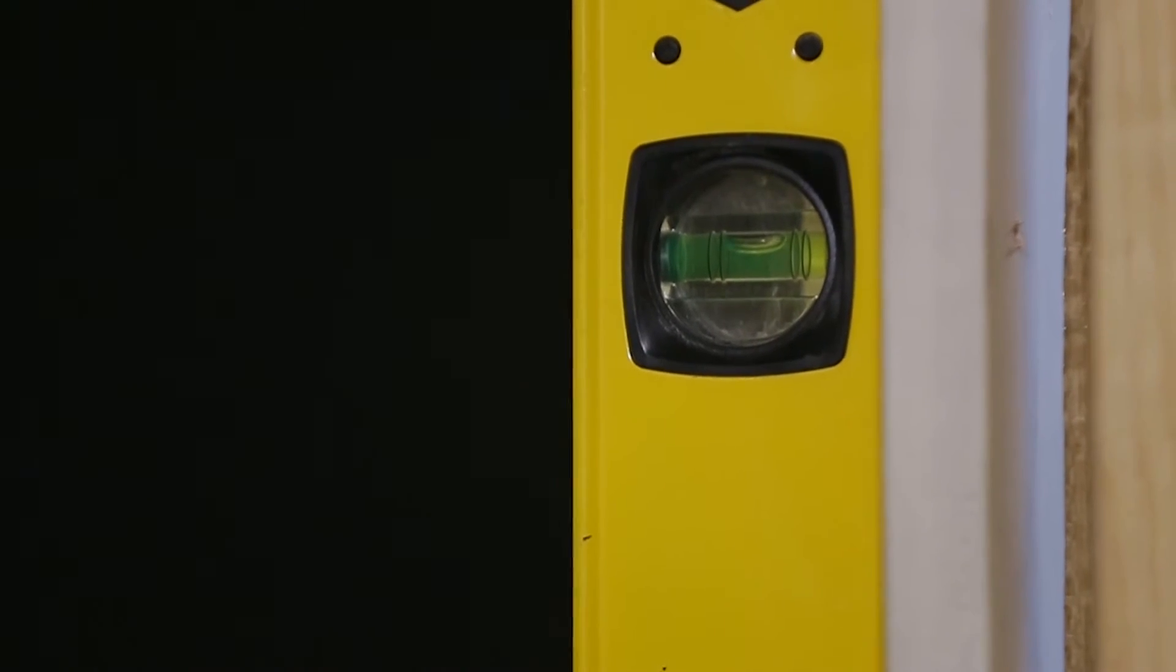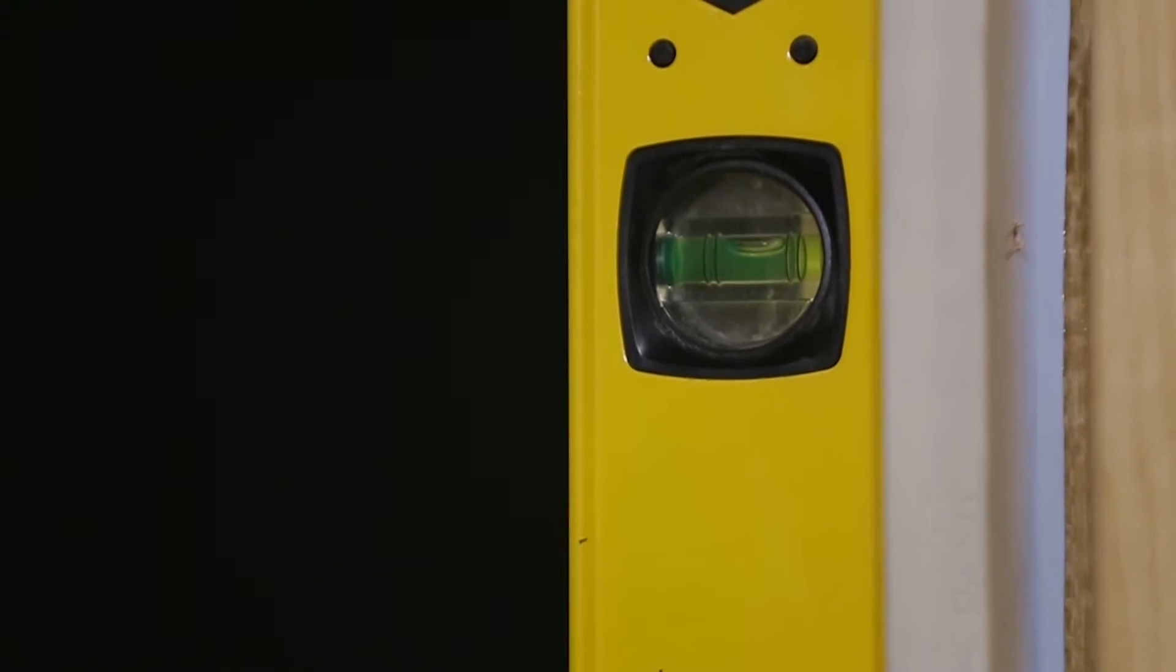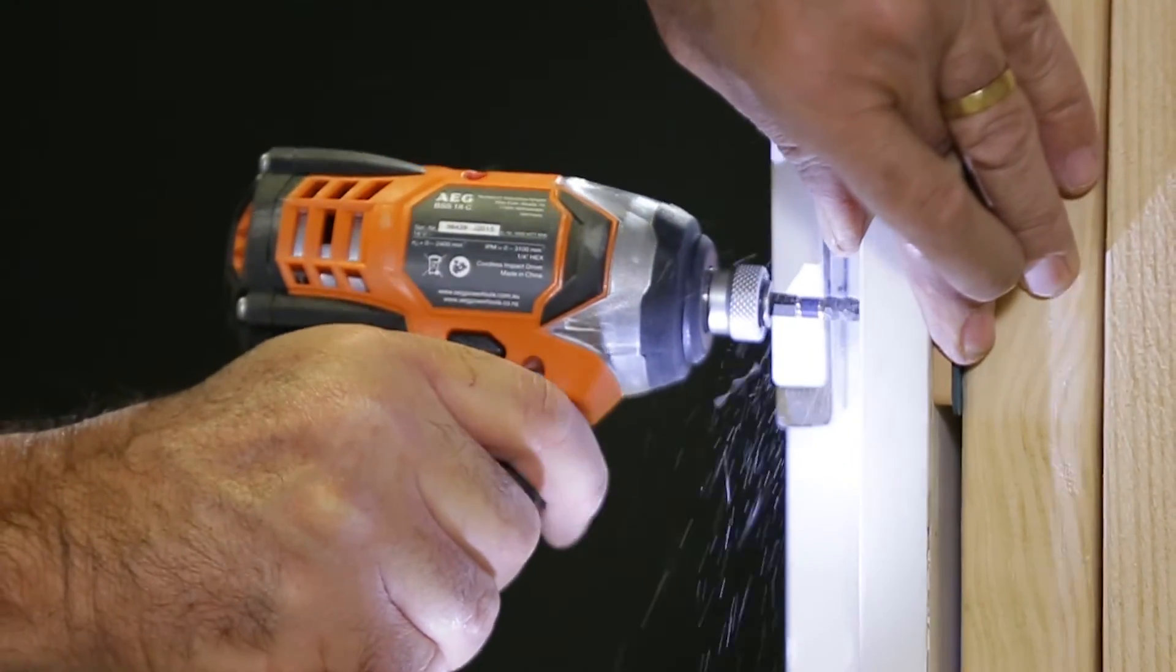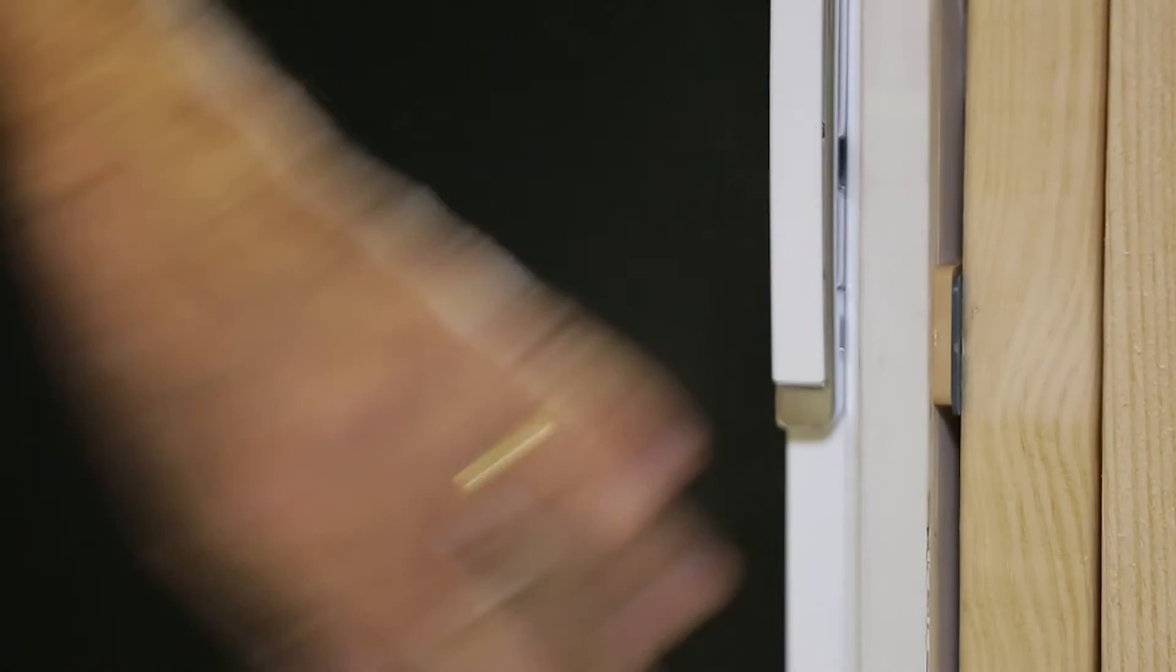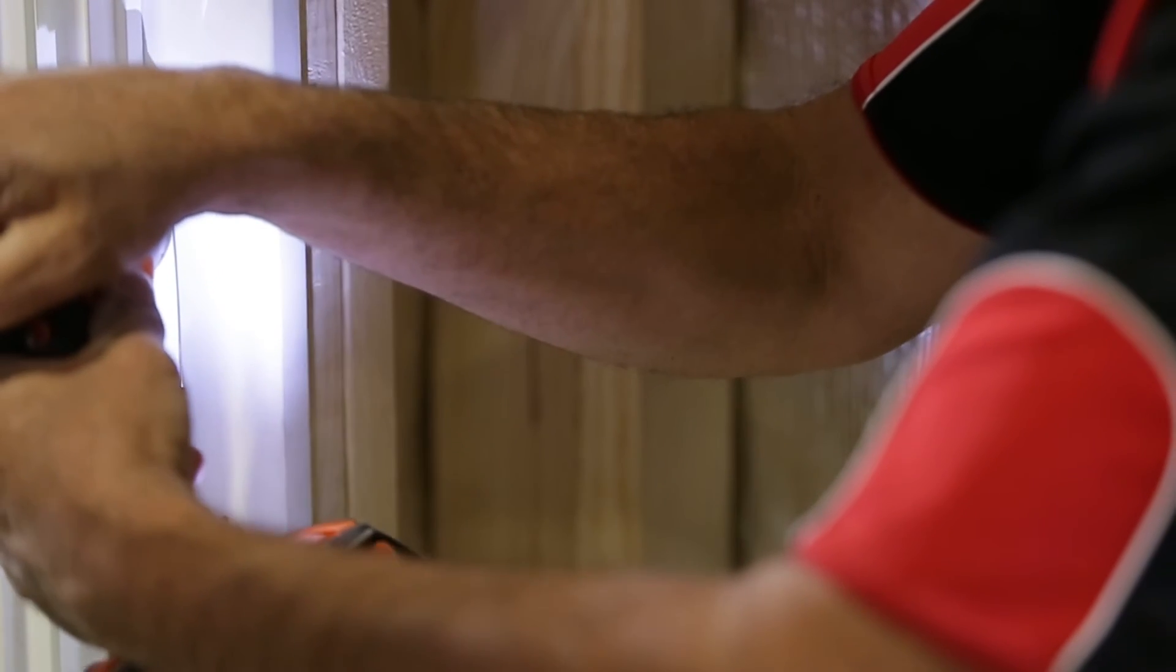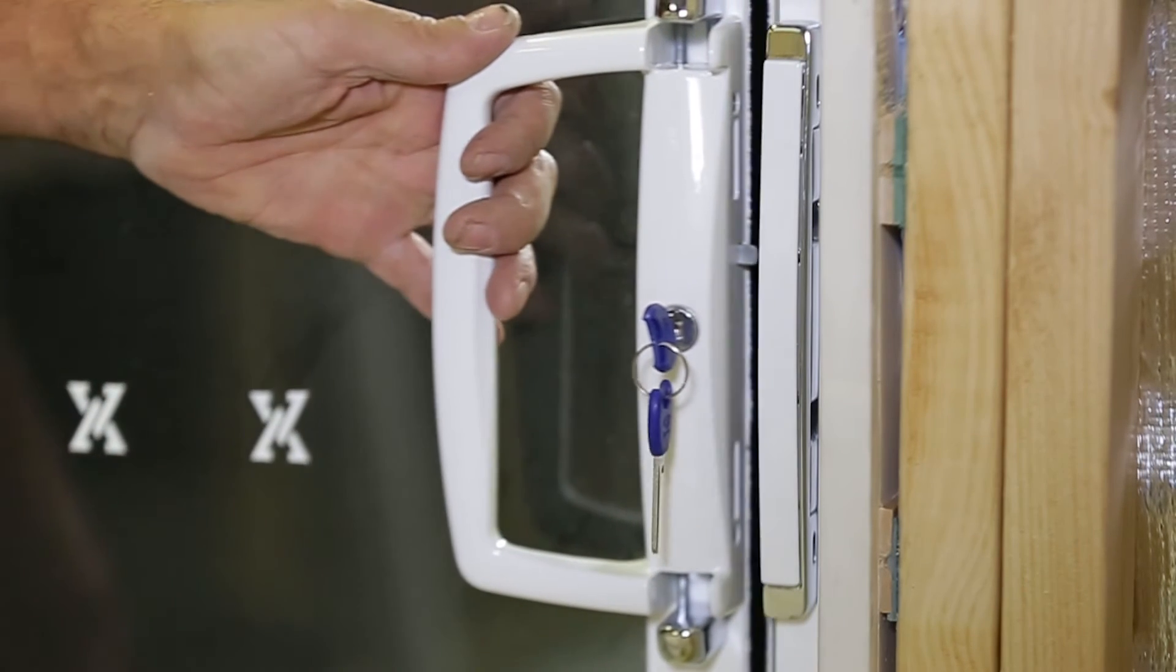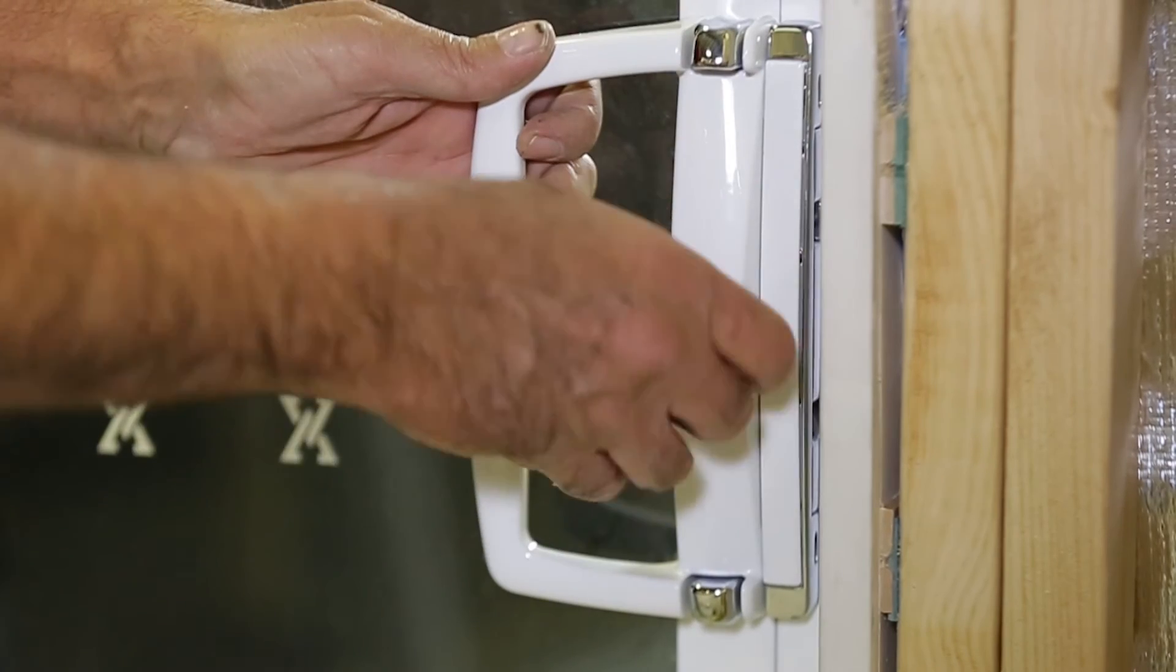It may take a few goes to get it right but it's important so take your time. Once you're happy the door is sitting right, fix off the rest of the frame using screws or nails with a gauge and spacing appropriate for the wind load. You should use nails and screws either stainless steel or galvanized to resist rust or corrosion. Be sure to fix near the lock striker. As a final check open and close the door a few times and make sure the lock operates correctly.